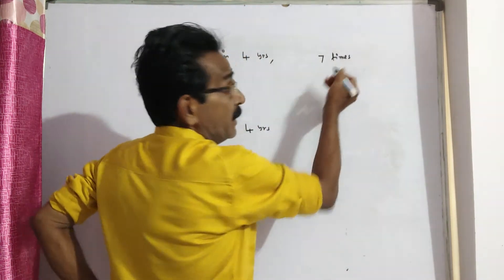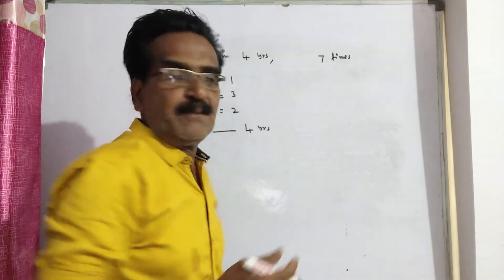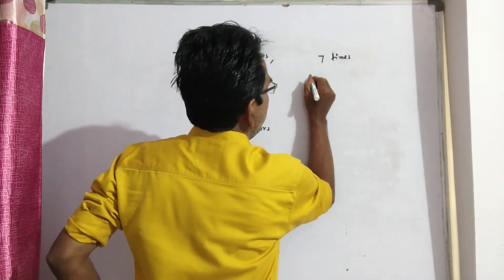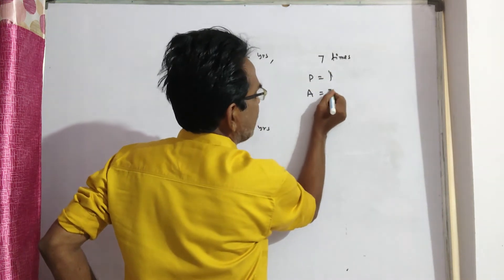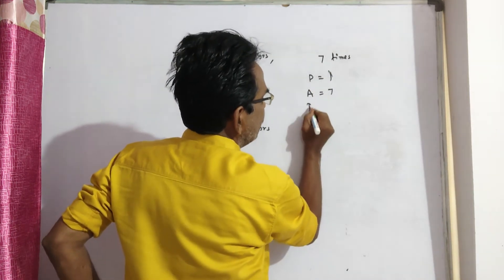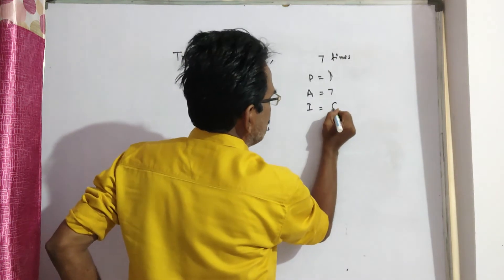Now let us see this case. A certain sum becomes 7 times means if P is equal to 1, A is equal to 7. Then interest is equal to 7 minus 1, which is 6.